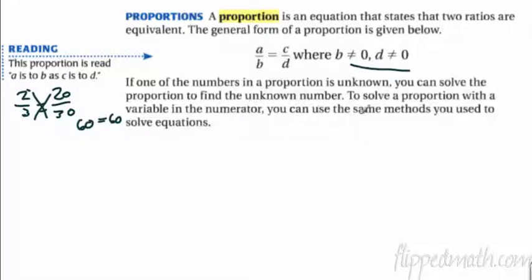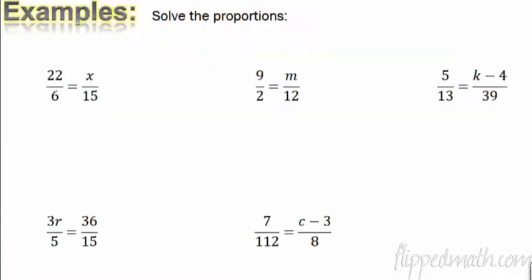All right, to solve proportion with variable in the numerator, you can use the same methods we use to solve equations. We're going to get more into cross multiplying in the next section. But for right now, we're just going to solve these equations using our opposite operations. Okay, first example, these are proportions. They're telling you they want you to find the value of x that'll make this true. Okay, so to find the value of x, what we're going to do, we're just going to solve these equations like a regular old equation that we did in unit three here.